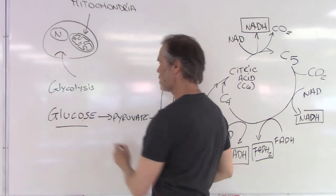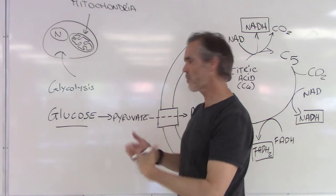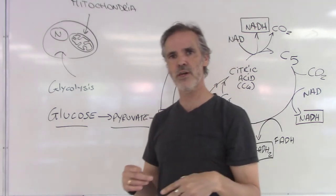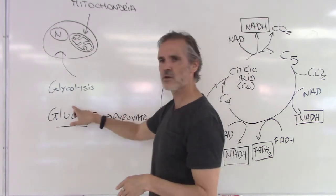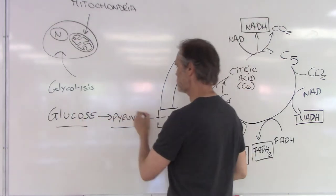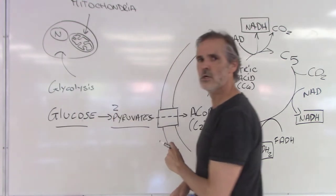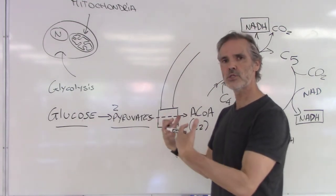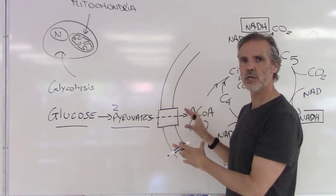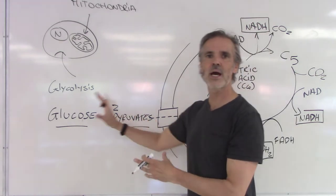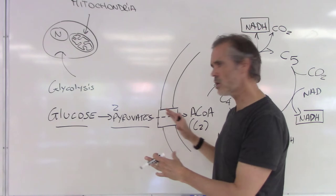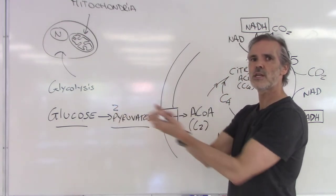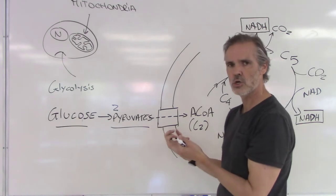We know that glucose goes through glycolysis in multiple steps and will eventually create two molecules of pyruvate — three carbons each, so six carbons total split into two times three carbons. This pyruvate is going to be able to enter inside the mitochondria. None of the other metabolites before that can do so, but there's a specialized door that receives pyruvate and brings it inside the mitochondria.